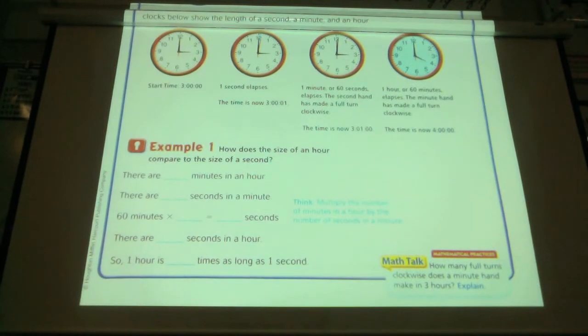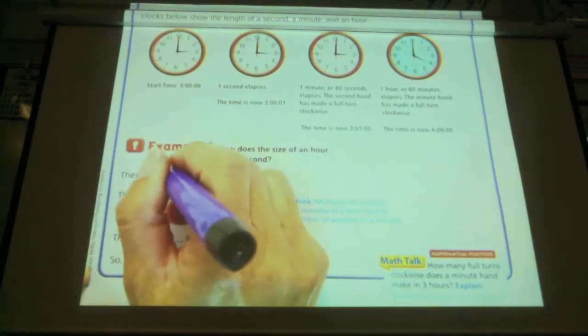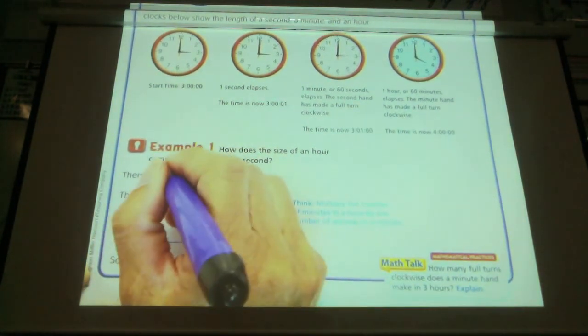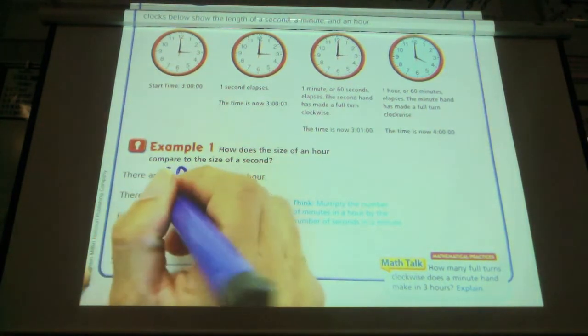How does the size of an hour compare to the size of a second? There are how many minutes in an hour? Sixty. And there are how many seconds in a minute? Sixty.